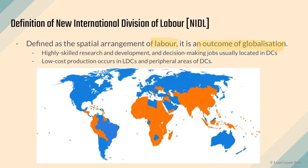There are essentially two disparities. The highest-skilled research and development or decision-making jobs are usually located in developed countries. On the other hand, low-cost, low-skilled jobs tend to be found in less developed countries or the peripheral areas of developed countries — the less developed parts of a country. This is similar to the north-south divide or development gap, but specifically focused on labor.